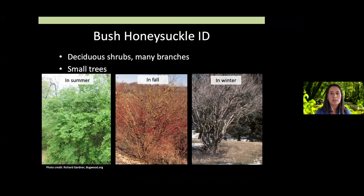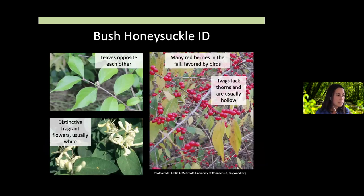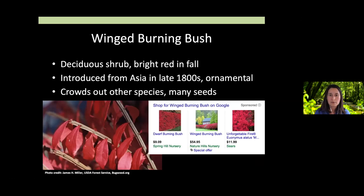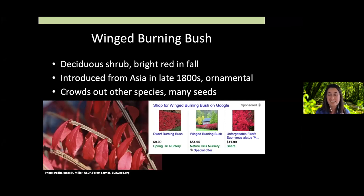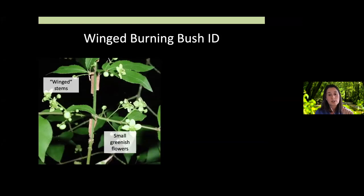A few more features of bush honeysuckle: it has lots of branches, is one of the first to leaf out in spring and last to lose its leaves in fall, has opposite leaves, fragrant flowers, and lots of red berries that birds love to eat and spread rapidly. Another shrub that should be on people's radar — and may be more surprising — is winged burning bush. It's a deciduous shrub that's really popular ornamentally for its beautiful fall color and is for sale everywhere, but I've seen it doing a lot of the same things as bush honeysuckle in other areas. It should be on your radar to avoid planting.